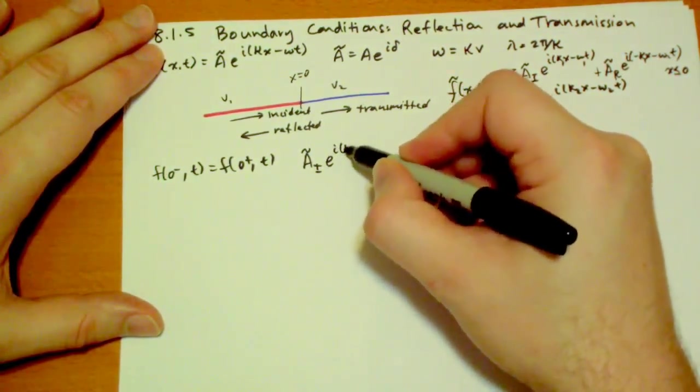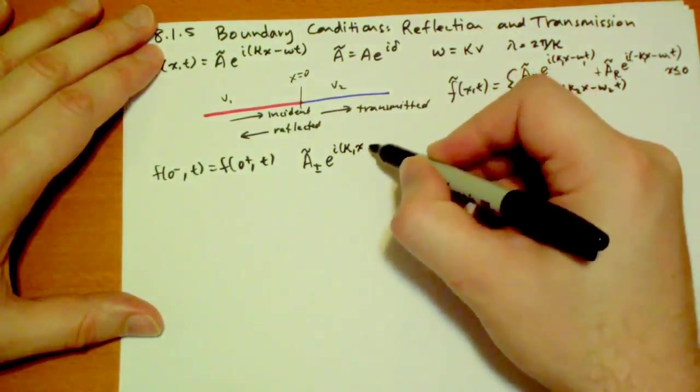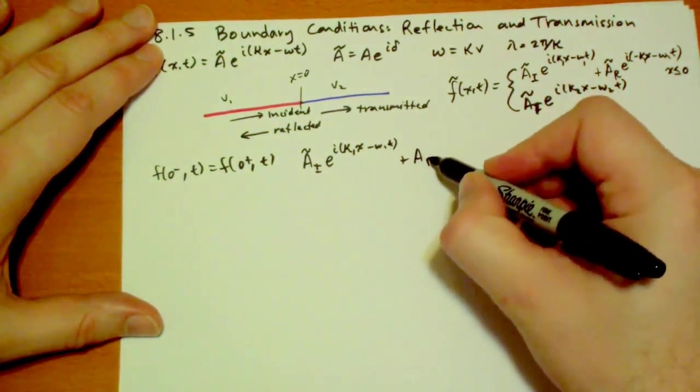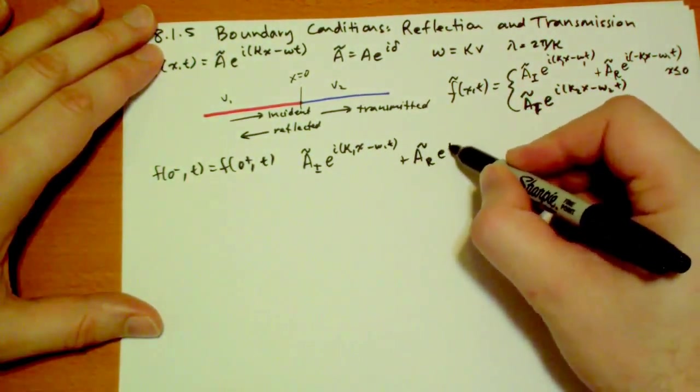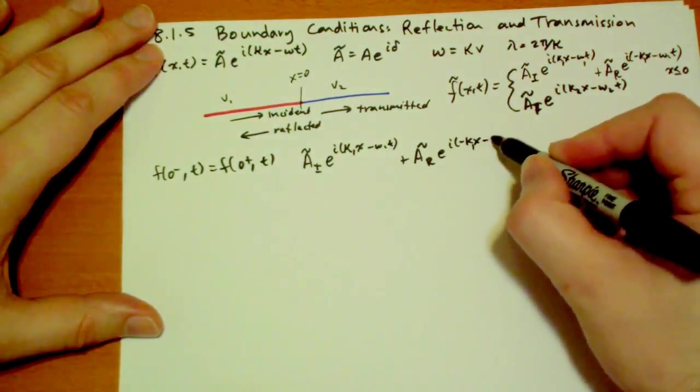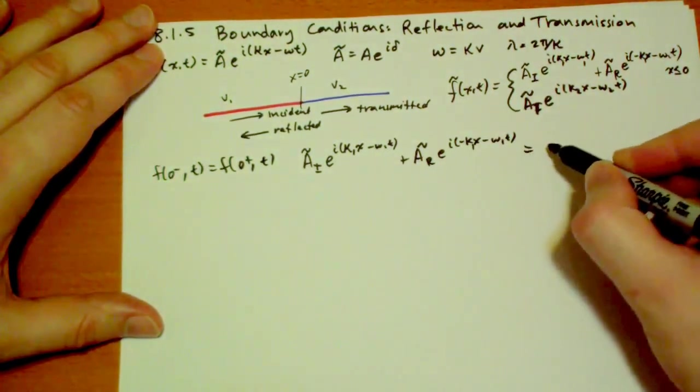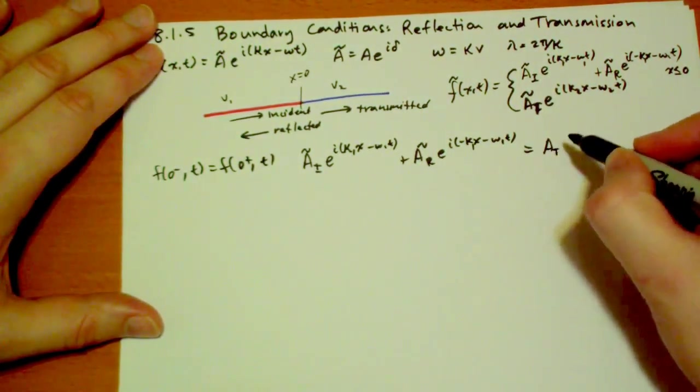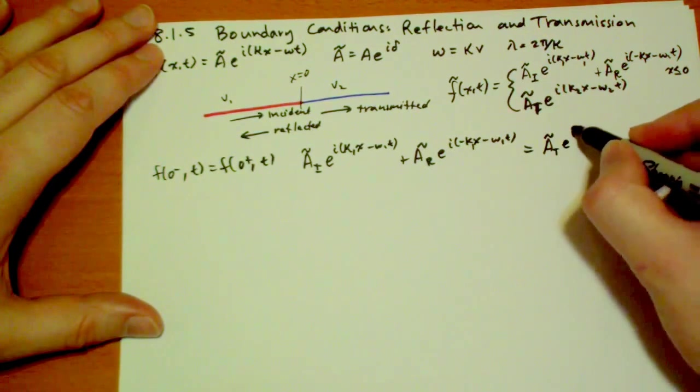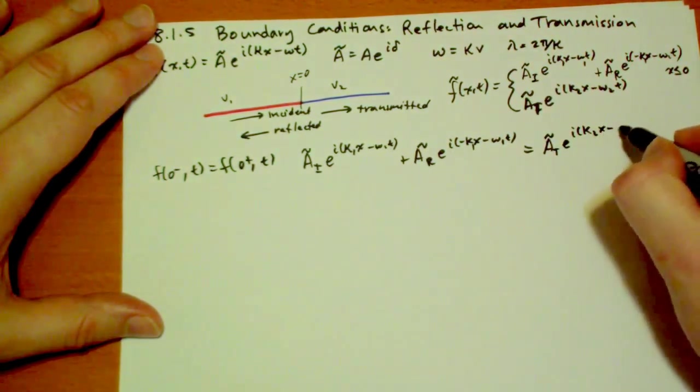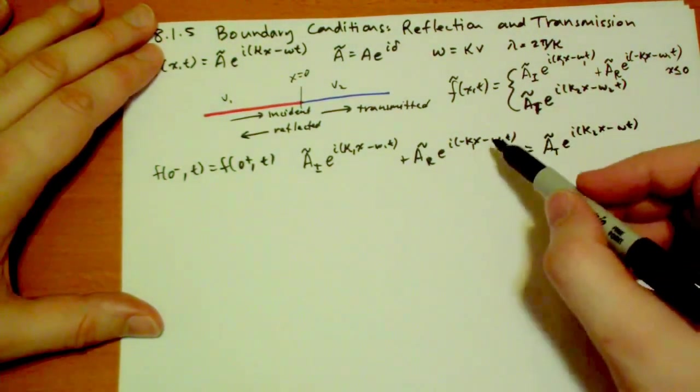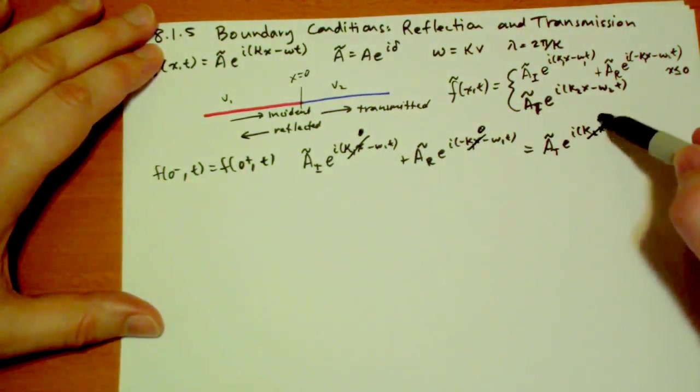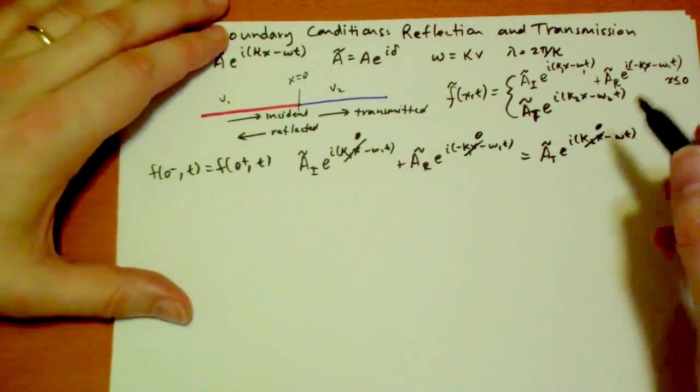So that will give us the formula that the incident wave, e to the i kappa 1 x minus omega 1 t, plus the amplitude of the reflected, e to the i negative kappa 1 x minus omega 1 t, has to equal a transmitted e to the i kappa 2 x minus omega t. But here all the x's are 0, so this is 0, this is 0, and this is 0. So we're left with this formula.